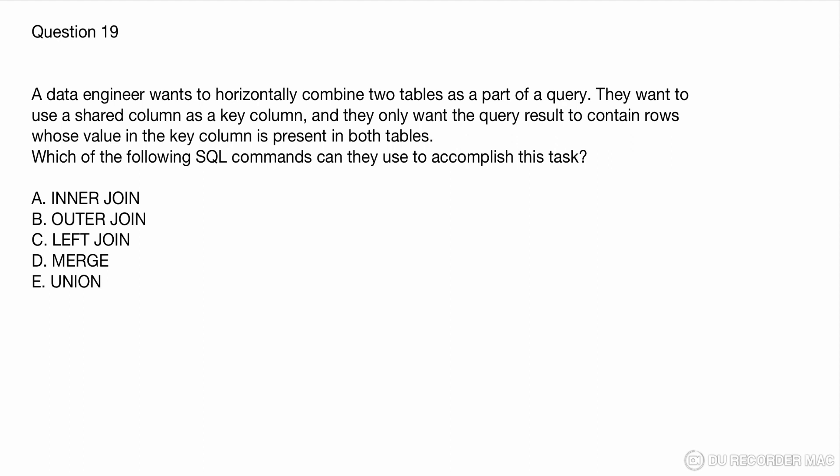Question 19: A data engineer wants to horizontally combine two tables using a shared key column. They only want rows where the key column value is present in both tables. This is a classic inner join scenario — you get only records available in both tables. Inner join is the correct answer.